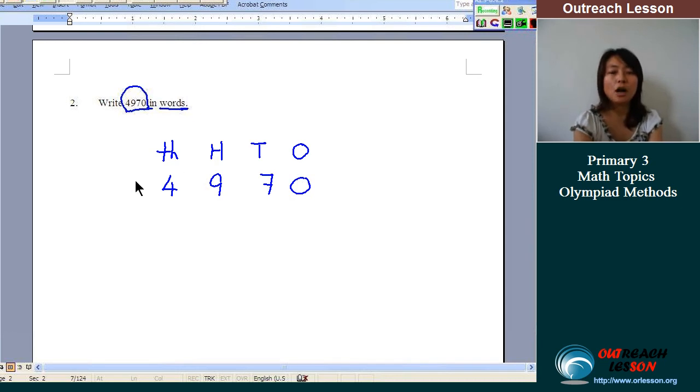So we will read it off. We have 4000. So we will write it down. 4 has to be in words. 4000. Remember to get the spelling correct.